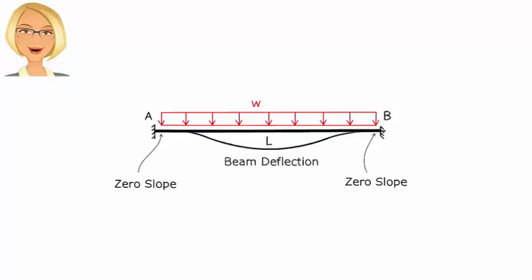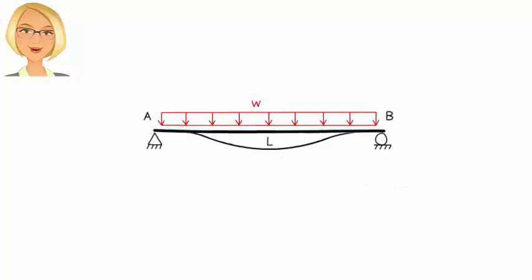First, assume the beam's ends are not fixed, rather they can rotate. So, basically, assume the beam is simply supported like this. Therefore, under the applied load, the beam is going to deflect downward like this.